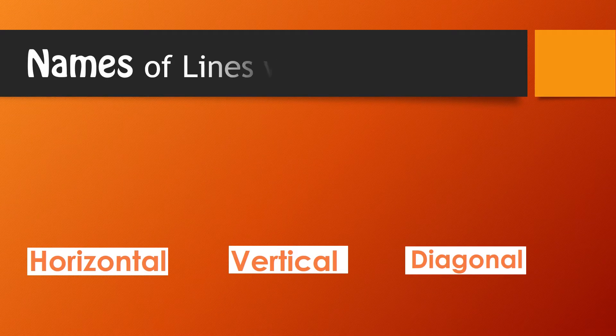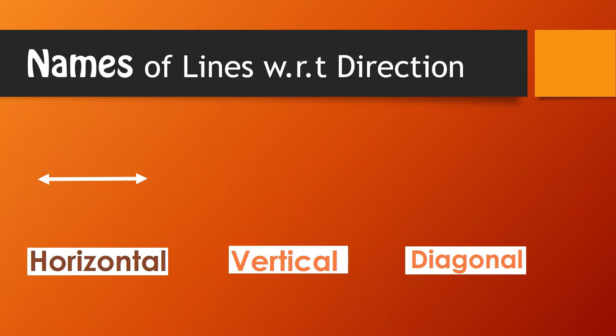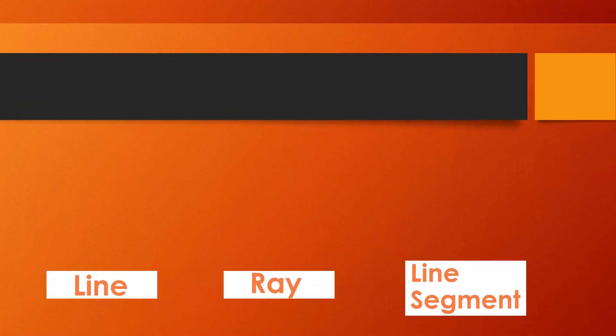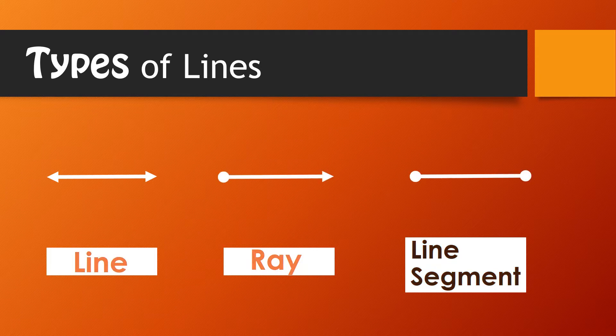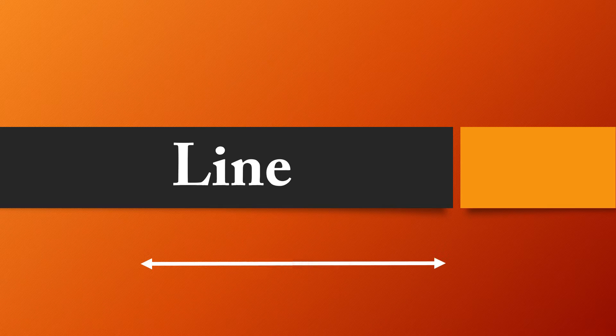This video is about line names with respect to their direction — horizontal, vertical, and diagonal types of lines. We will discuss line, ray, and line segment.